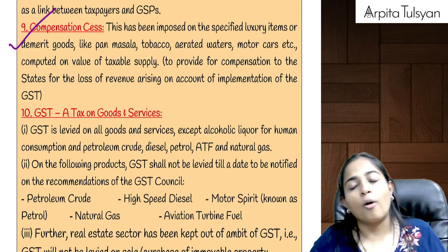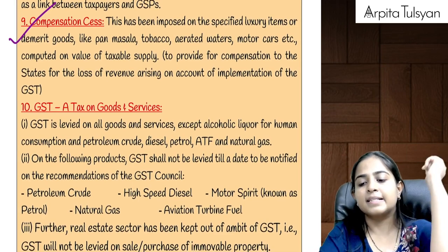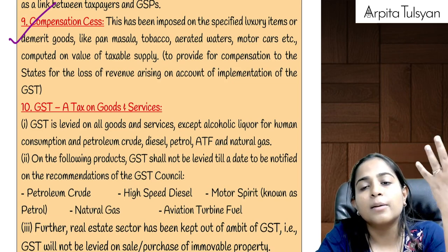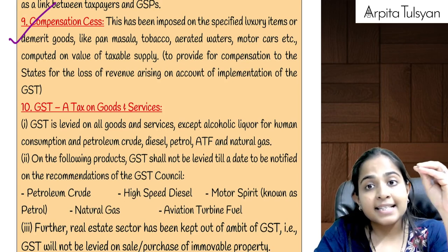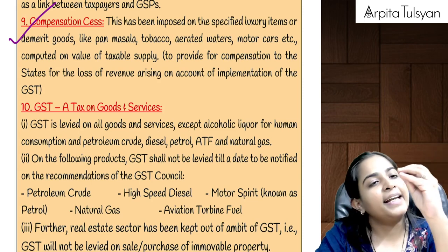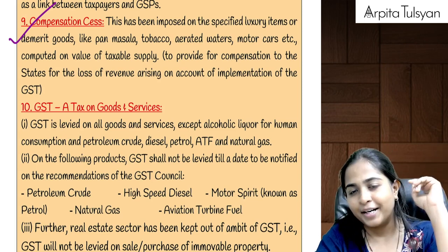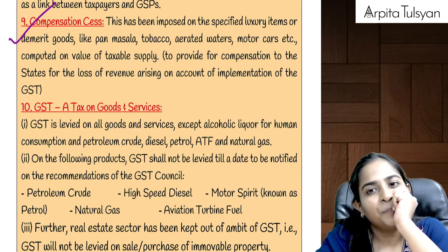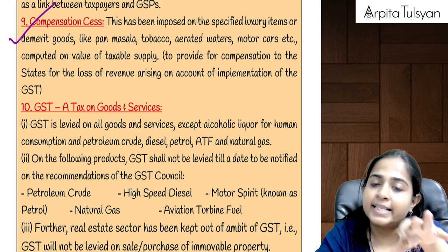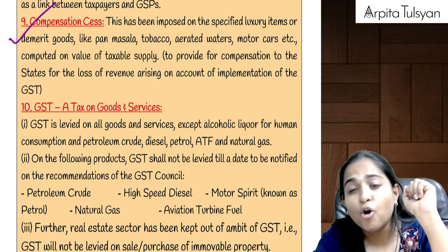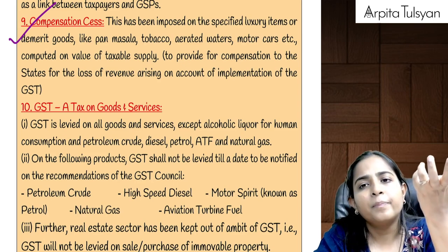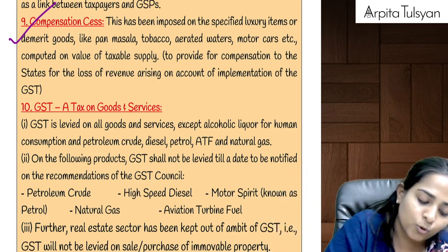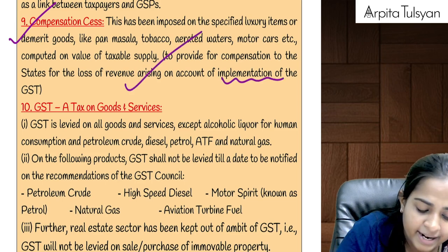The next topic is compensation cess. Earlier, on some luxury products and demerit products, taxes were fully levied by the state government and entire revenue was going to the state government. But now, the revenue is shared between central government and state government. So state government will suffer the loss of revenue. State government said it wants some compensation. Central government agreed — we will collect a new tax called GST Compensation Cess, and that will be paid to the respective state which has suffered loss due to implementation of GST.